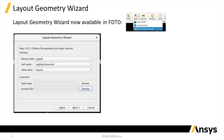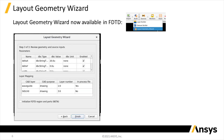Then, the user selects the geometry to import by specifying the library, cell and view names, and the layer map of the process files. Last, the user reviews the input parameters and layer mappings, and can also enable the Initialize FDTD Region and Ports option to automatically add the simulation region and FDTD ports.